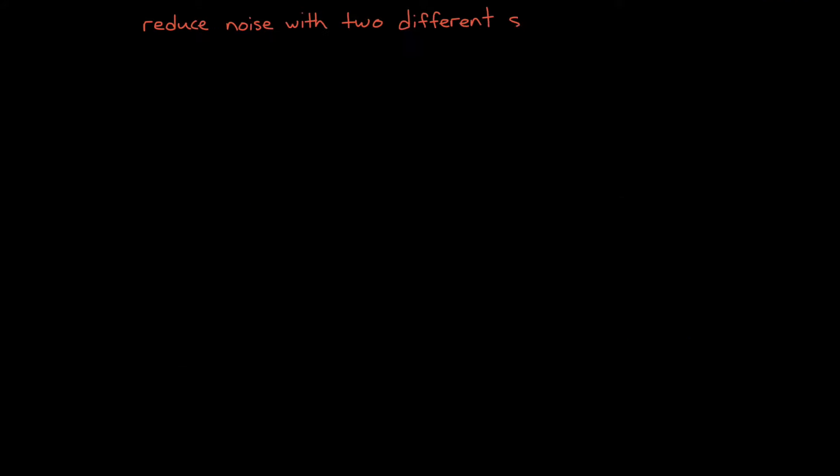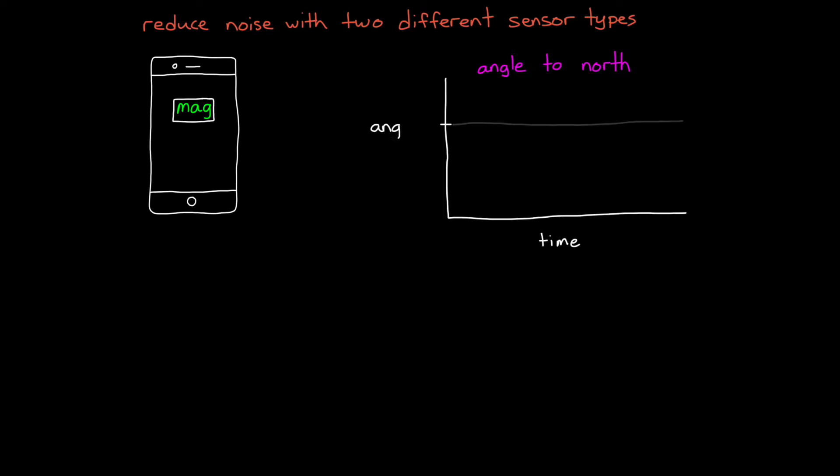Now we can also reduce noise by combining measurements from two or more different types of sensors. And this can help if we have to deal with correlated noise sources. For example, let's say we're trying to measure the direction your phone is facing relative to north. We could use the phone magnetometer to measure the angle from magnetic north. However, just like with the accelerometer, this sensor measurement will be noisy.